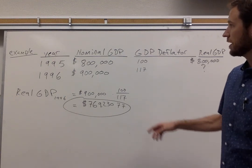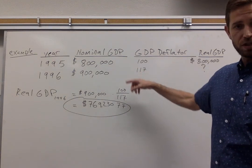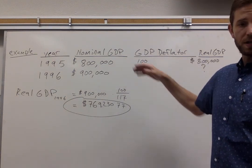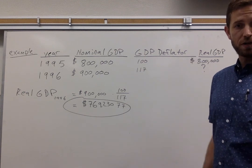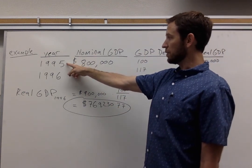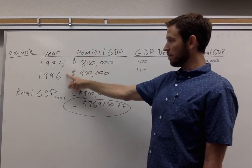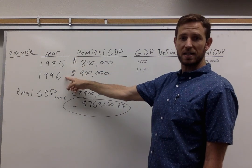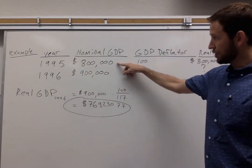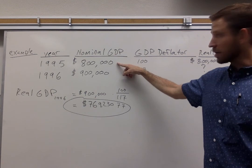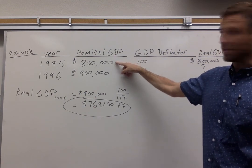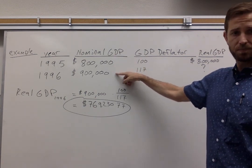On the board here I've got a whole bunch of data characterizing GDP across two different years. Starting on the left, I've got two years I just made up — 1995 and 1996 — and let's say that GDP increased across those two years from $800,000 up to $900,000.